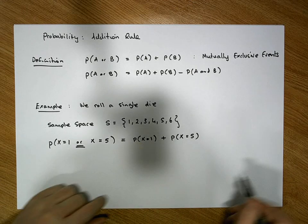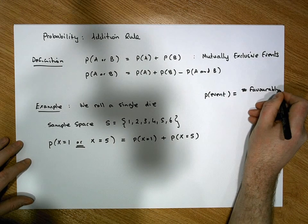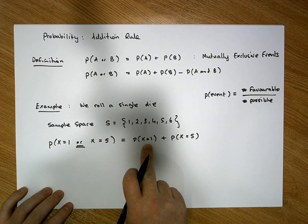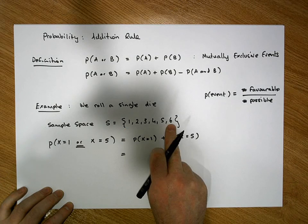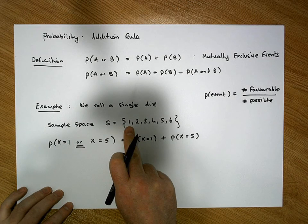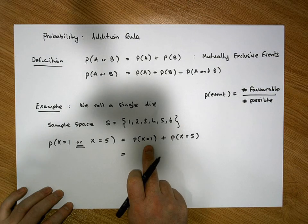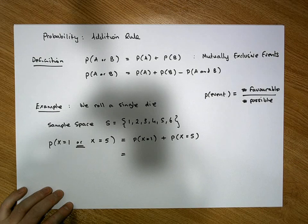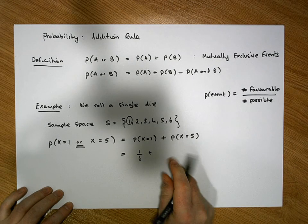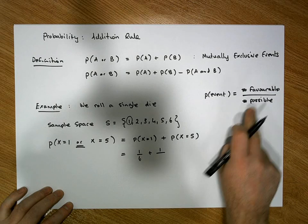We know that the probability of an event is the number of favorable outcomes divided by the number of possible outcomes. To calculate the probability that the outcome is one, we walk the sample space and count how many values satisfy the condition. There's only one '1' in the sample space, so P(1) = 1/6. Similarly, there's only one '5' in the sample space, so P(5) = 1/6.